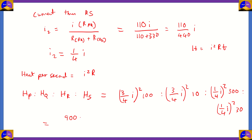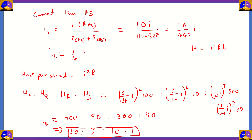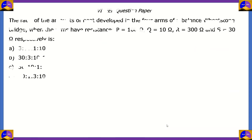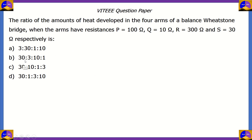We get 900 : 90 : 300 : 30. Dividing the whole ratio by 30: 900 divided by 30 gives 30; 90 divided by 30 gives 3; 300 divided by 30 gives 10; and 30 over 30 is 1. So 30 : 3 : 10 : 1 is the ratio of the heat produced in each of the four resistances in a balanced Wheatstone bridge. Therefore, option B — 30 : 3 : 10 : 1 — turns out to be the right option.